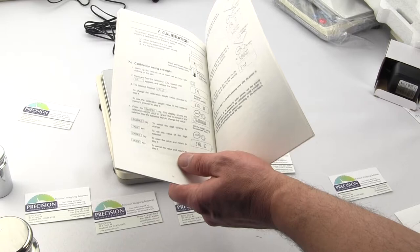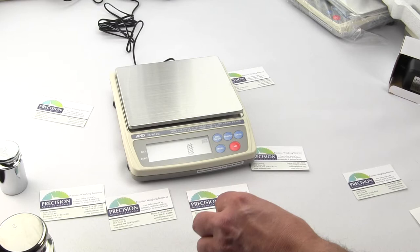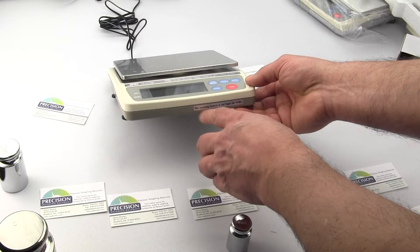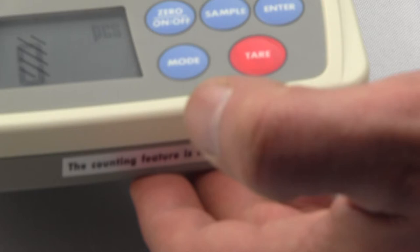You'll notice also on the front of the scale since this is legal for trade the very front there is a sticker saying the counting feature is not legal for trade. This needs to be on the scale as part of the requirements for NTEP approval. So that sticker can't be removed if you are using this for a legal for trade application.